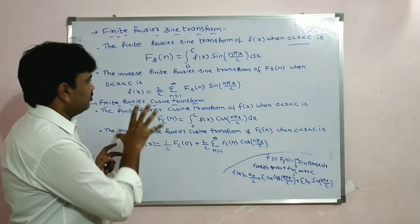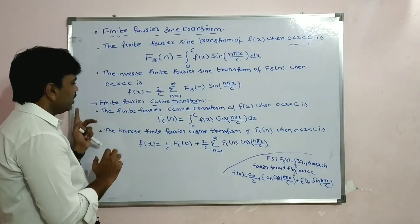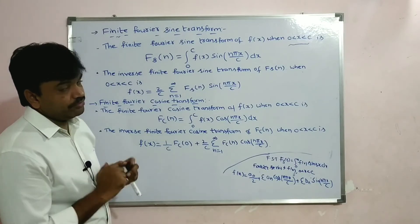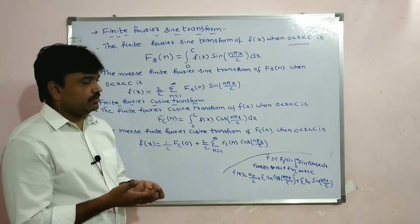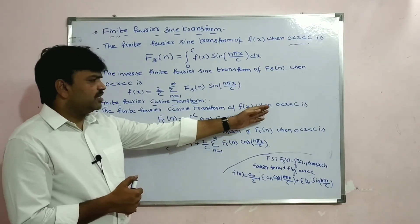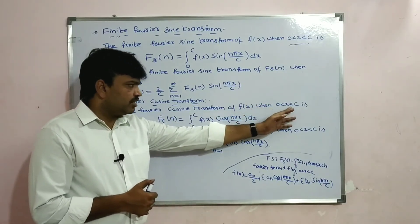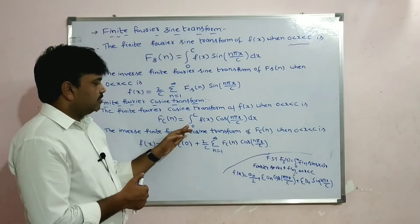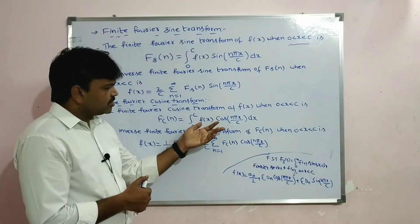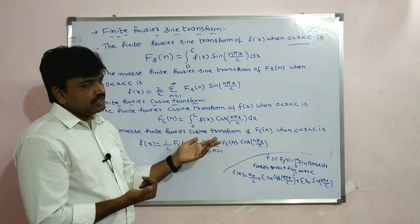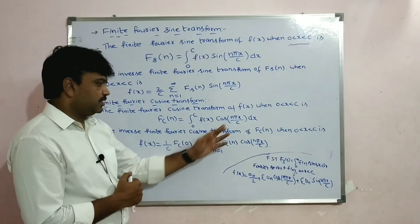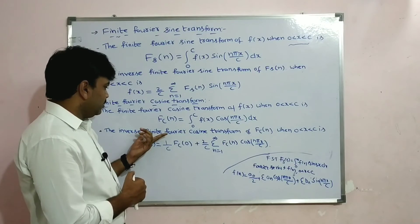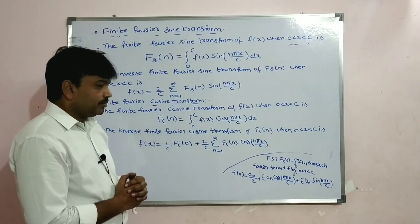Similarly, the Finite Fourier Cosine Transform: for the interval 0 < x < c, Fc(n) equals integral from 0 to c of f(x) cos(n·π·x/c) dx.